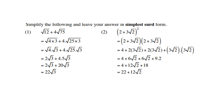Next one, number 2: (2 plus 3 times square root of 2) to the power of 2. In algebra we have what we call a perfect square, so you can use the distributive law to remove the brackets, then group like terms. 2 times 2 is 4, 2 times 3 square root of 2 is 6 square root of 2, the other 2 times 3 square root of 2 is also 6 square root of 2, and 3 times 3 is 9, and square root of 2 times square root of 2 is 2. So 6 square root of 2 plus 6 square root of 2 is 12 square root of 2, and 4 plus 18 is 22. The answer is 22 plus 12 square root of 2.